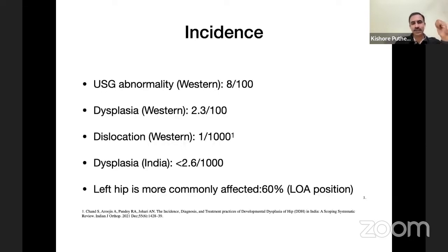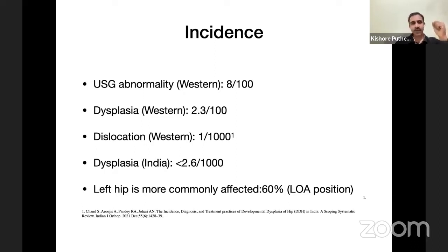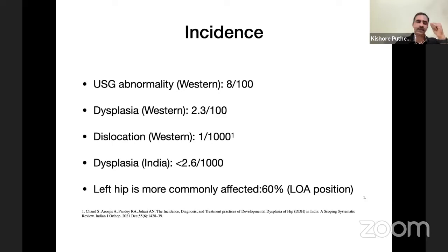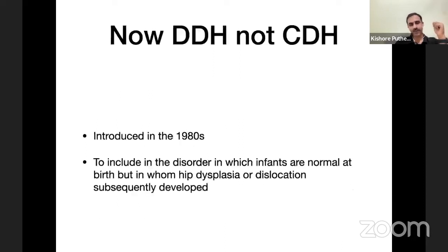What is the incidence? In western literature, dysplasia on ultrasound screening of all live births is seen in around 8%. Clinical dysplasia is seen in around 2% in western population, and a dislocated hip is identified in 0.1%. The Indian literature says dysplasia is around 0.2%, about one tenth of the western incidence. The left hip is more commonly affected, most probably due to the left occiput anterior position.